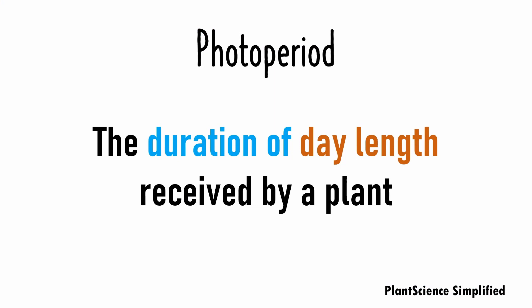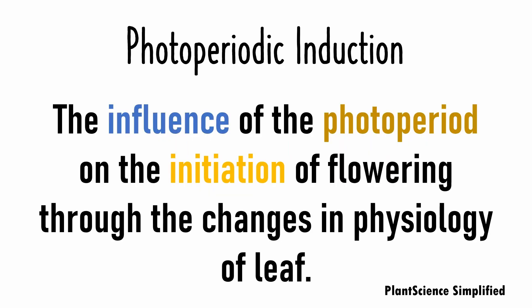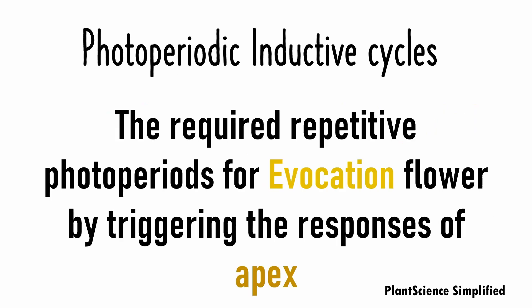The duration of day length received by a plant is called as photoperiod. The influence of the photoperiod on the initiation of flowering through the changes in physiology of leaf is called as photoperiodic induction. The required repetitive photoperiods for evocation of flower by triggering the responses of apex is termed as photoperiodic inductive cycles.